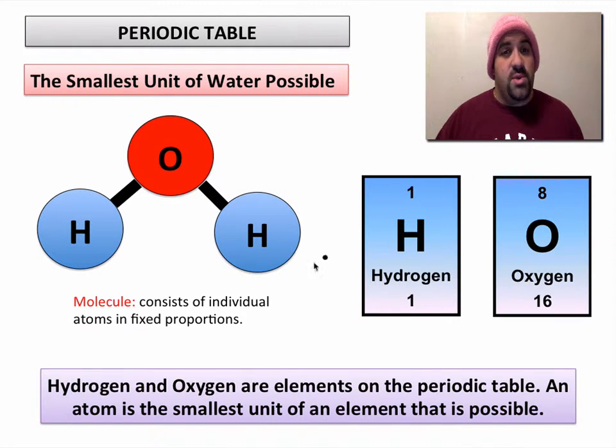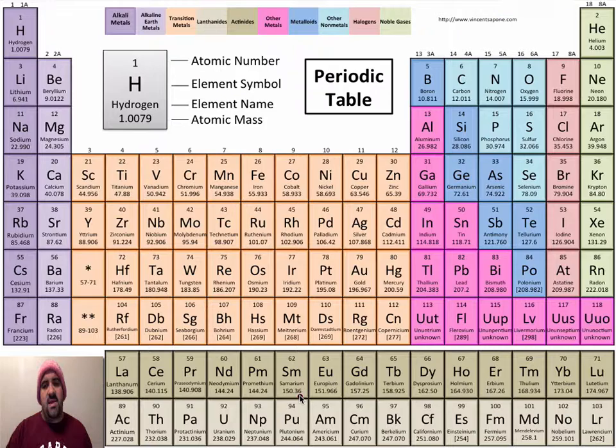While the smallest unit of water possible is one molecule of water, because water is a combination of atoms, the smallest unit of any element possible is going to be one atom of something. So we're going to look at the periodic table.